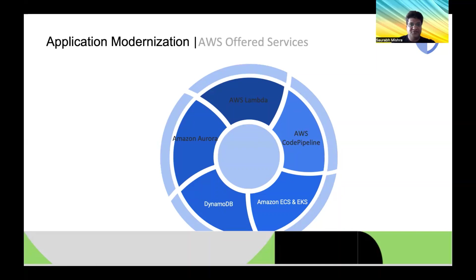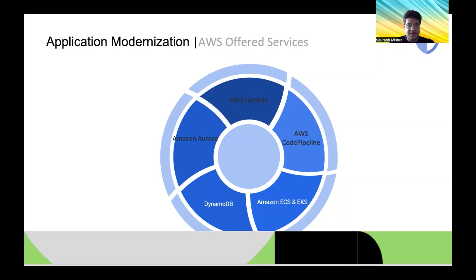Amazon ECS and EKS provide a highly secure and reliable way to run containerized applications. EKS lets you run Kubernetes applications without operating your own Kubernetes clusters — it's a fully managed Kubernetes service from Amazon. Amazon SageMaker lets you build, train, and deploy machine learning models at any scale. DynamoDB is one of the best NoSQL databases available from AWS. Additionally, the AWS Application Migration Service automates application migration and modernization, and the AWS Serverless Application Repository lets you discover and deploy serverless applications.